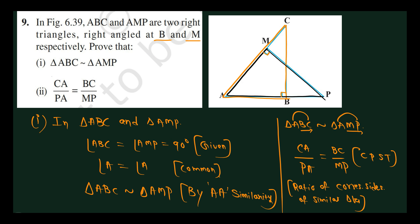Triangle ABC is similar to triangle ABC, with 90 degrees angle A equal to angle A. Then we can say triangle ABC is similar to triangle ADE, and from this we can prove the sides are in the same ratio — corresponding sides of similar triangles are equal.